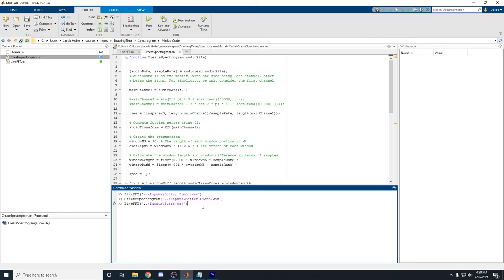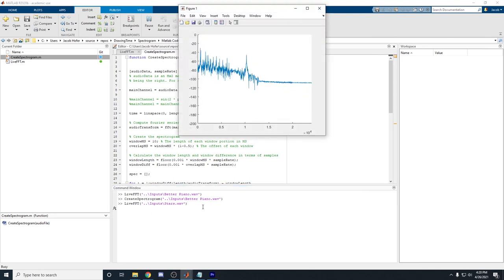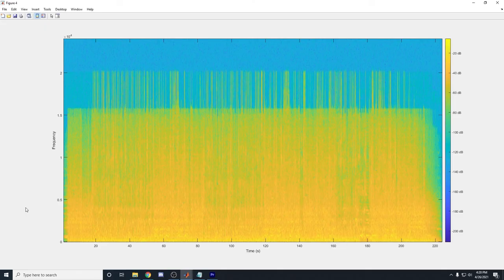We can also look at this for a song. In this case, Stars by the band Switchfoot. And then here's the computed spectrogram with the beginning of the song being a little bit quieter before going really loud and continuing for the majority of the song and then tapering off towards the end.